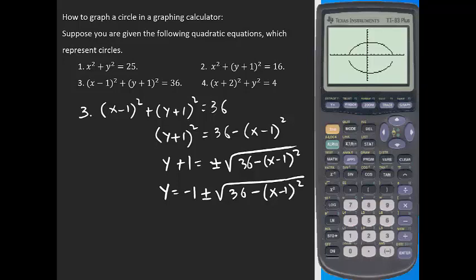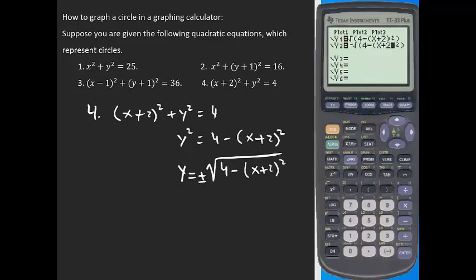The last example: (x plus 2) squared plus y squared equals 4. Subtract (x plus 2) squared from both sides to get y squared equals 4 minus (x plus 2) squared. There are no other y terms, so take the square root of both sides: y equals plus or minus the square root of 4 minus (x plus 2) squared. Enter it into the calculator and be careful with the sign — put the negative key first, then use the minus sign inside.